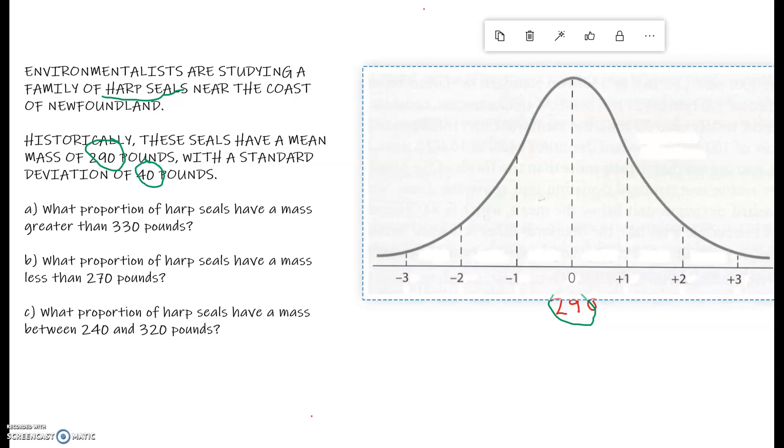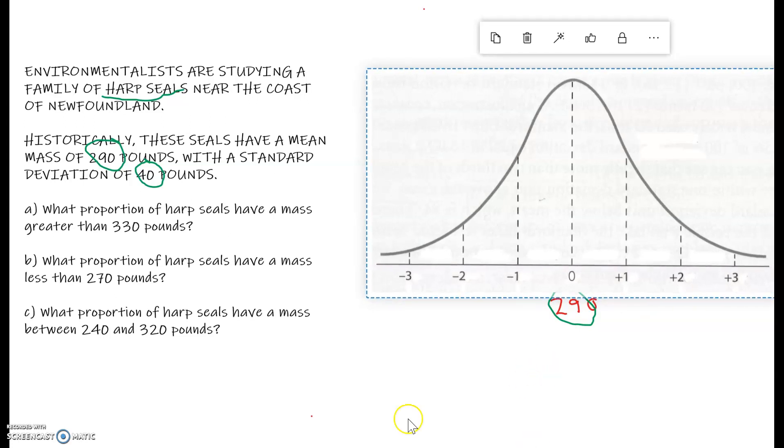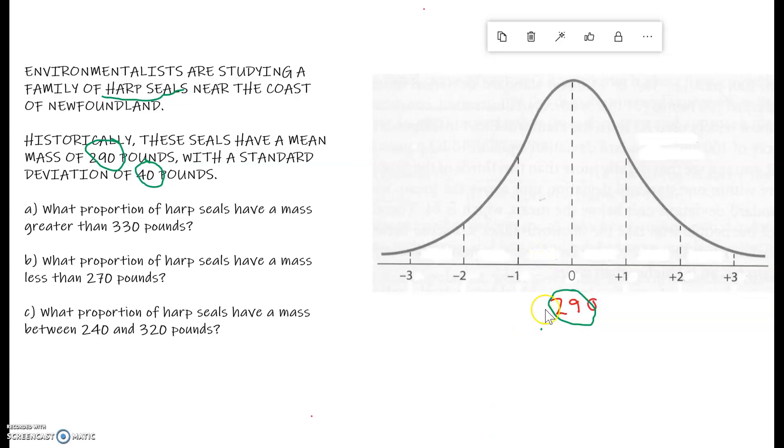But this time, we want 270 pounds. Let's think about where 270 pounds is. That would be right here. We would have this space right here. This is where 270 would be. Our Z-score would actually be negative one-half. So we are not on a standard deviation here. So really, I want this area.